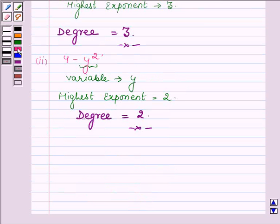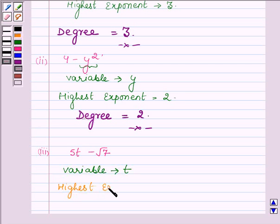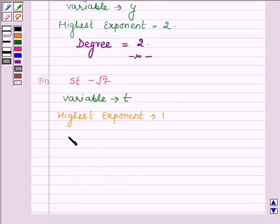And now, proceeding on to the next part, which is 5t - √7. This is a polynomial with variable t and the highest exponent of t is 1. Therefore, degree of this polynomial is equal to 1. This completes the third part.